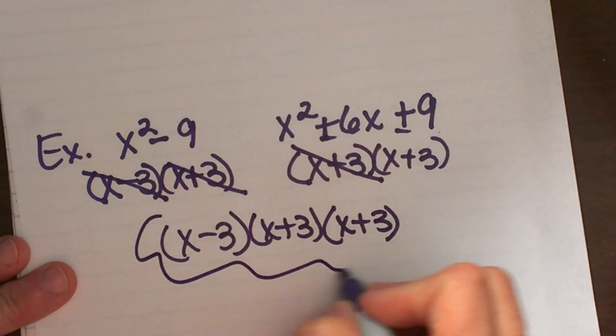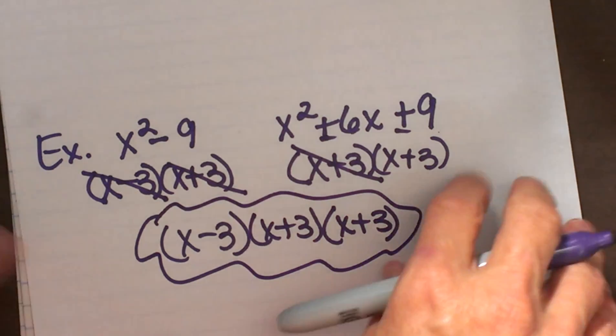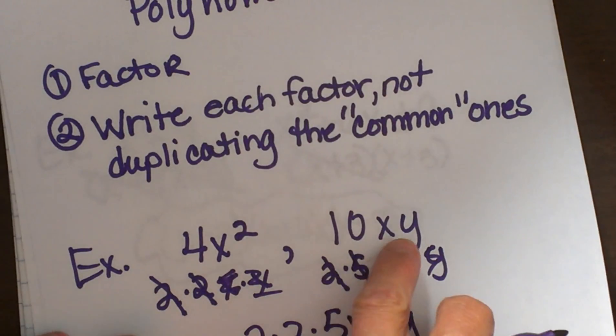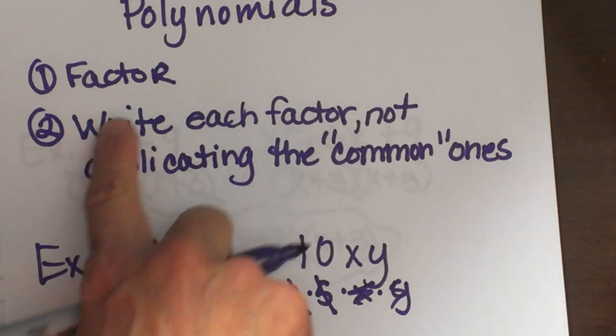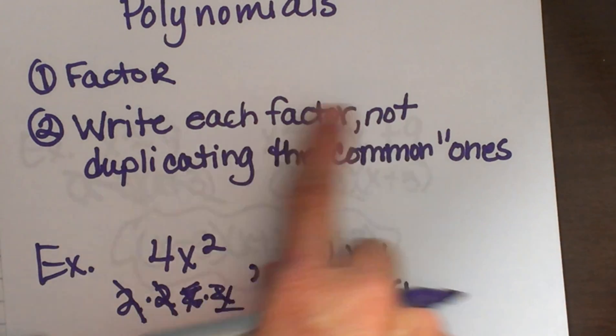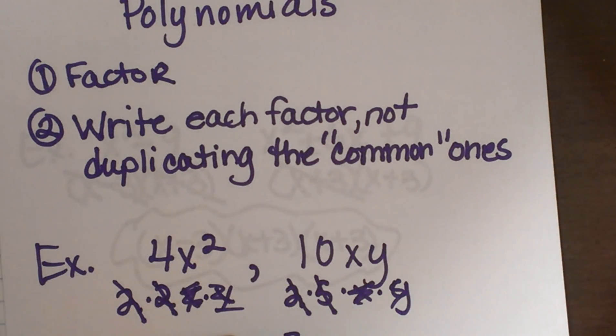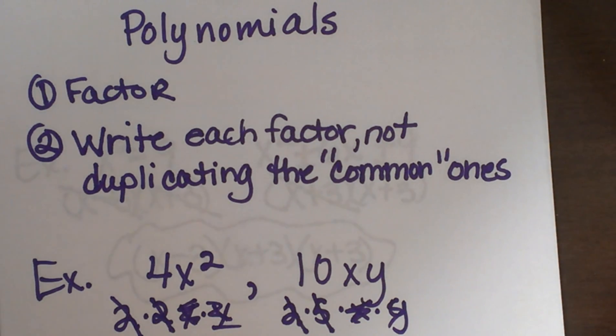So let's go over the rules real quickly one more time. You are going to factor your terms and you are going to write each factor but you do not want to duplicate the common factors. And that is kind of how you find the least common multiple for polynomials.